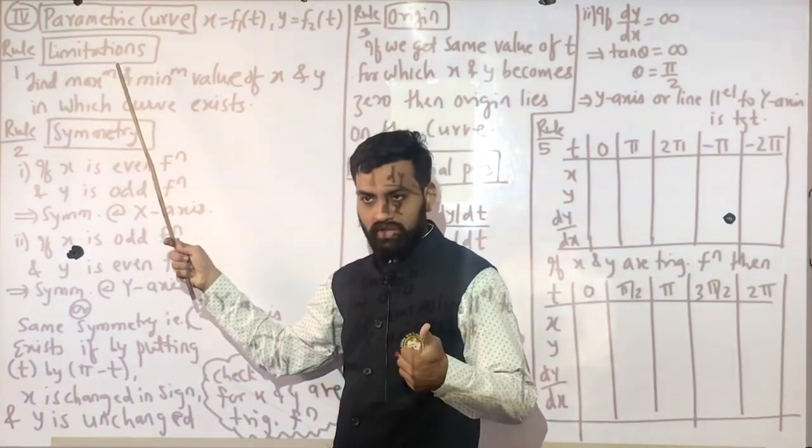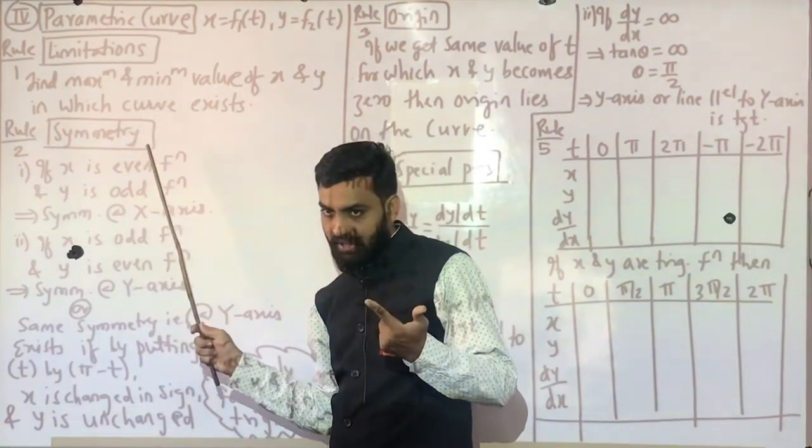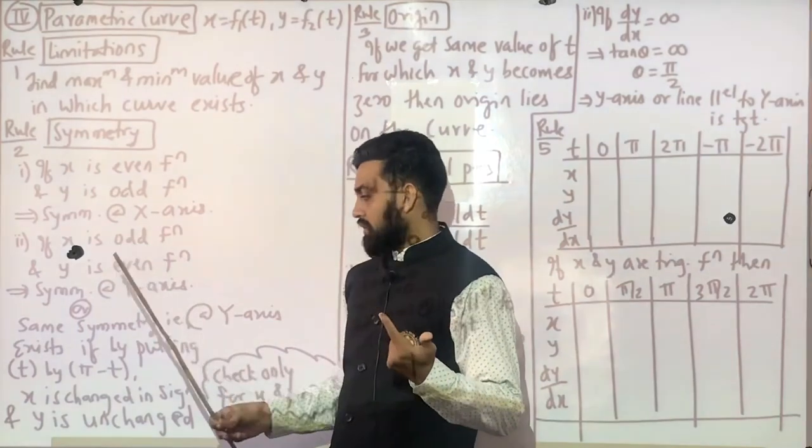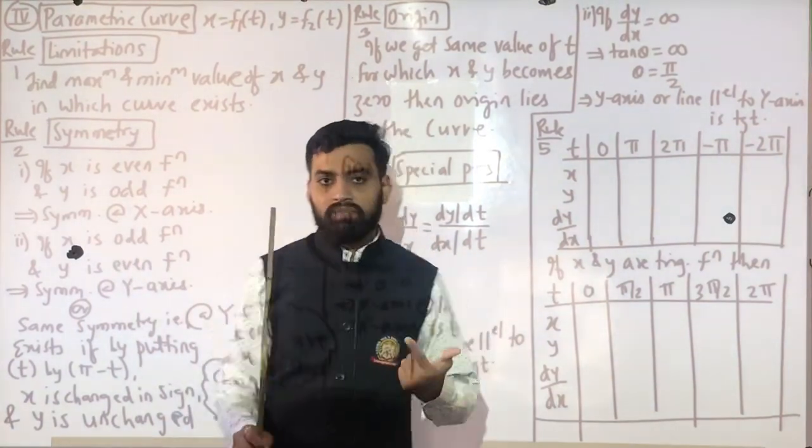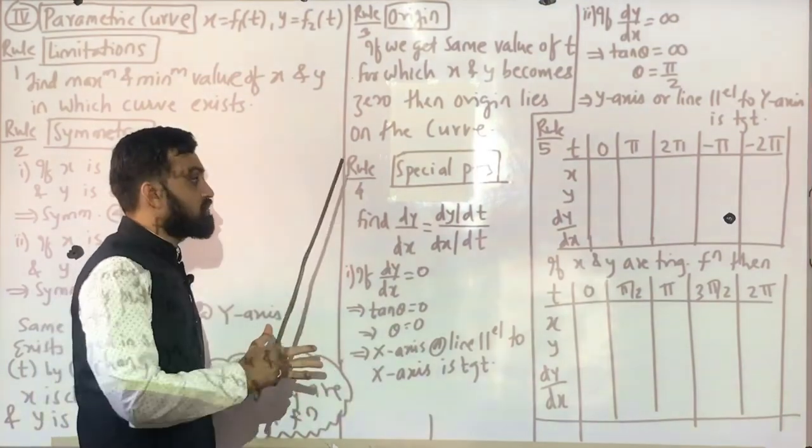Rule 1 is Limitation. Rule 2 is Simulatory. Just the points. Rule 3 is Rule G. Rule 4 is Question of Points.